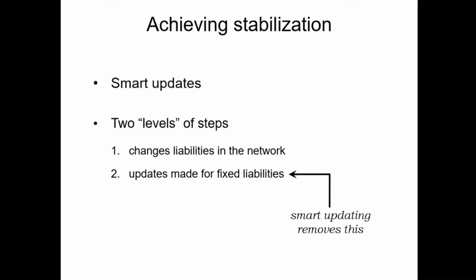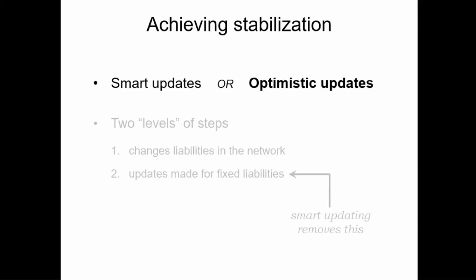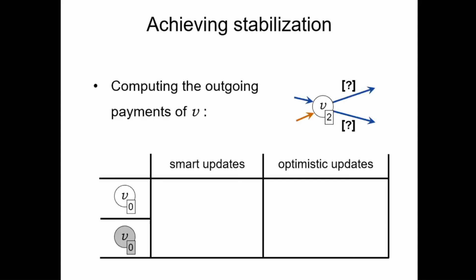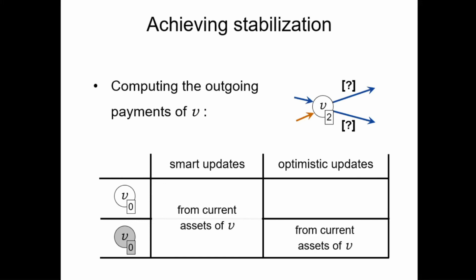We can also do these smart updates slightly differently in a method called optimistic updates, where the base idea is the same but the computations are done a little differently. Essentially, while smart updates compute the outgoing payments from any node by analyzing the network to see how many assets it has, optimistic updates handle defaulting and non-defaulting nodes slightly differently. For defaulting nodes, we again compute the amount of outgoing payments by analyzing the network, but to nodes that haven't reported a default yet, we give the benefit of the doubt and assume that they can fulfill all their obligations, even if the current network state suggests otherwise. This description is far from formal, but we just want to give you the general idea of what's behind these methods.